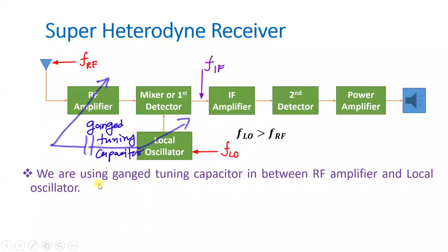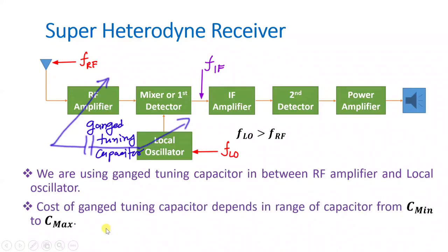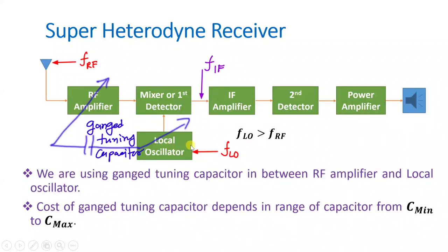We need to understand the cost of this ganged tuning capacitor. The cost depends on the range of the capacitor, which varies from C_min to C_max. If you increase this range from C_min to C_max, the cost of the ganged tuning capacitor increases. So if we have a lower range, we can decrease the cost of the circuit in the super heterodyne receiver.